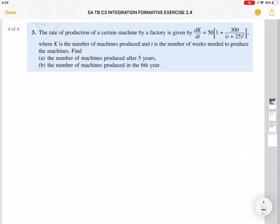Question number three. The rate of production of a certain machine by a factory is given. I need to tell you this: the question should mention k is the total number of machines produced and t is not number of weeks—it's supposed to say after t years. You notice this is in years; this cannot be weeks, it must be years.